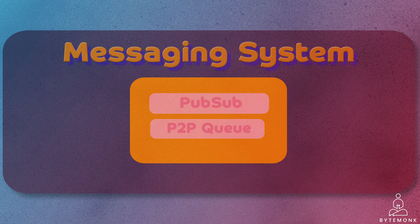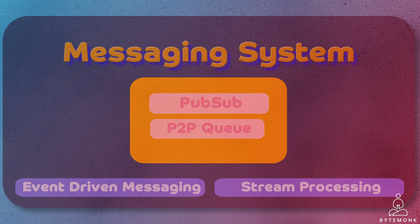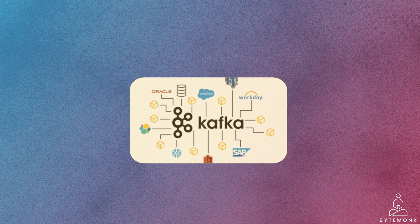Apart from the pubsub model and P2P queuing, there are also other flavors of messaging, such as event-driven messaging or stream processing, which I will cover in future videos when we do a deep dive on Apache Kafka.